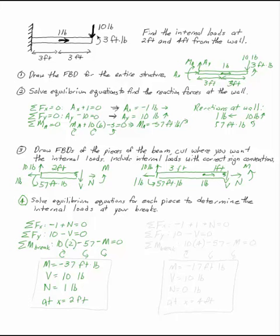At x equals 4 feet, I get different answers. The sum of the forces now has negative 1 plus 1 plus n equals 0. So n is going to be equal to 0.